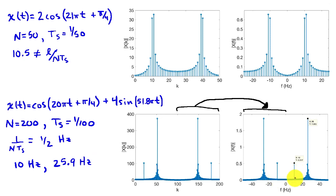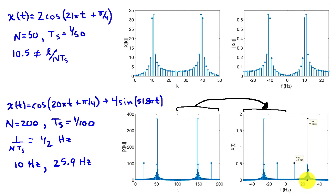In the resulting spectrum, there is a component at 10 hertz and minus 10 hertz with amplitude slightly bigger than one-half. It should be exactly one-half for the cosine alone, but the 25.9 hertz sine uses all DFT coefficients generally, biasing the amplitude slightly. The sine term shows up near 26 hertz, with peak amplitude of about 1.9 — roughly four times the amplitude of the cosine term.